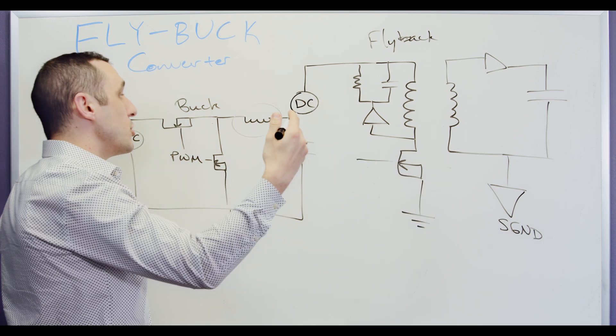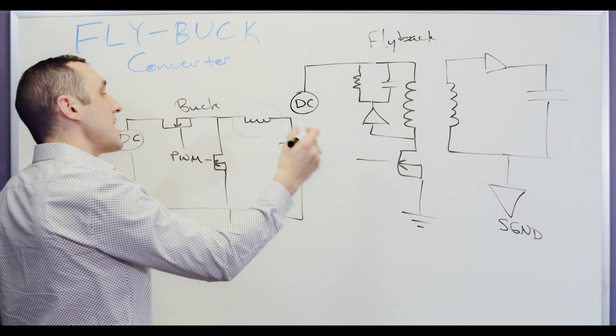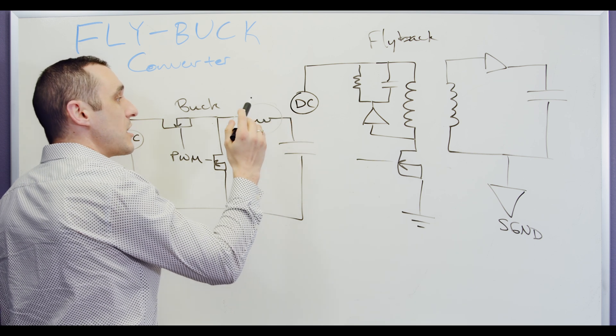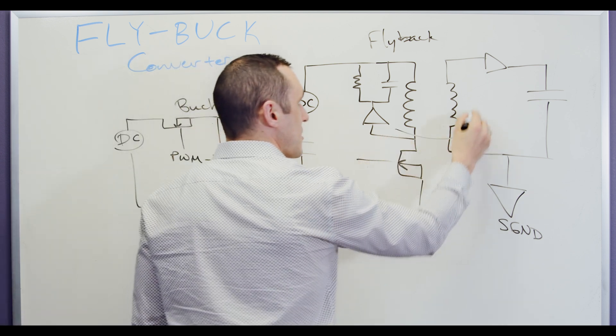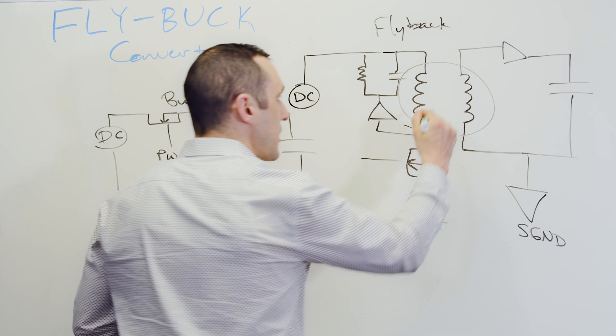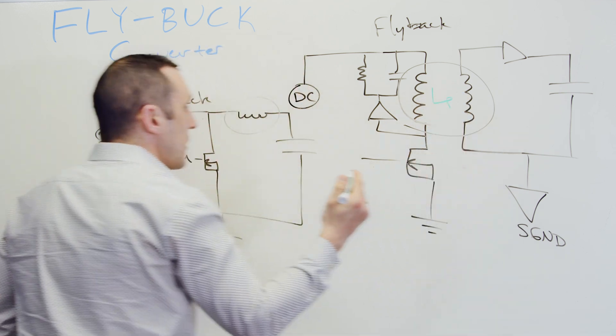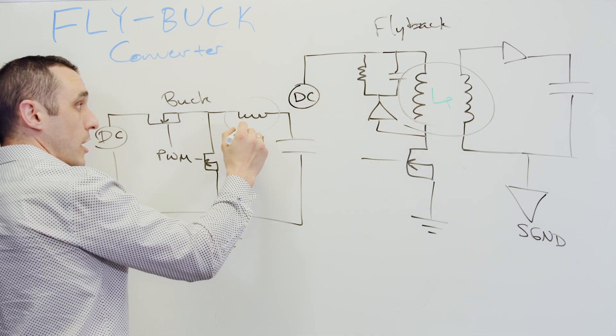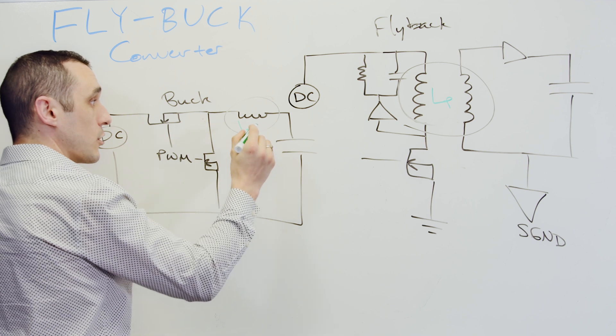that we have here in the flyback converter over here in our buck converter. So by doing that what we're actually doing is we are taking this inductor, and then we can replace it with this transformer. So that this primary coil right here, LP, then forms our primary coil over here in the buck converter, LP.